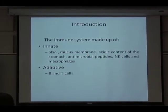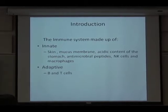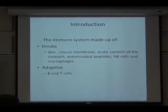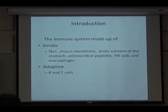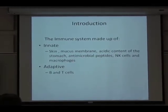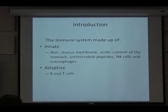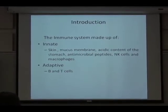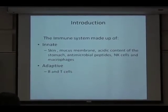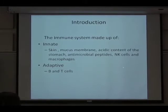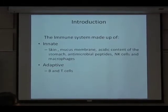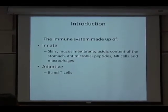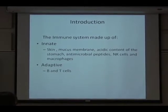We have mucous membranes, like in your nose and your respiratory tract, that are able to trap microorganisms before they can even get into your cells. Then we have acid produced by the stomach, which also helps neutralize pathogens. Then antimicrobial peptides — these are contained in body fluids like tears — they contain antimicrobial peptides, and they are all part of the innate immune system.